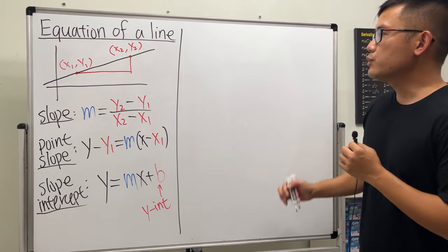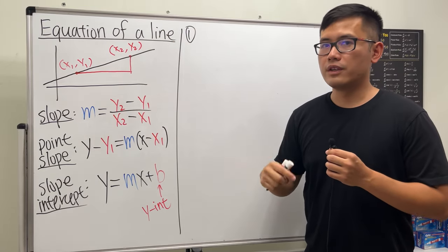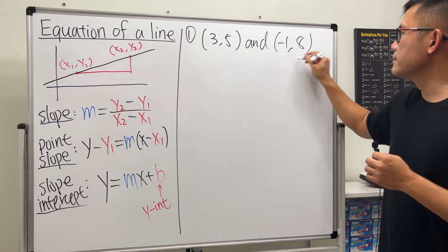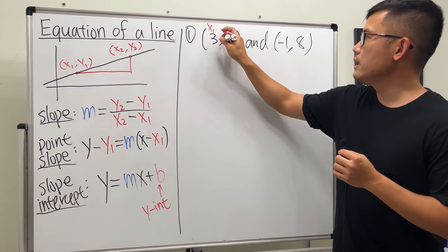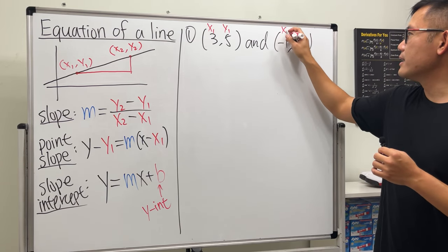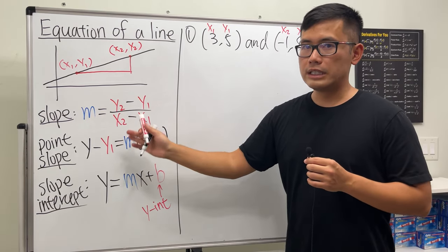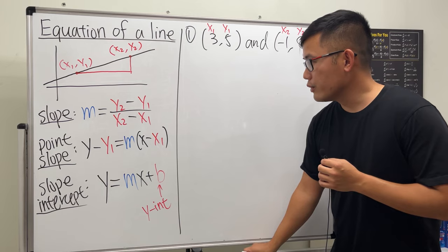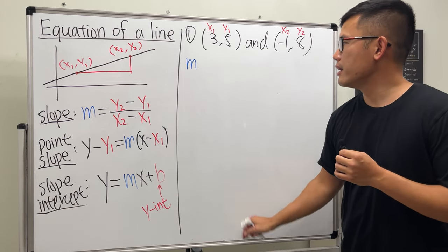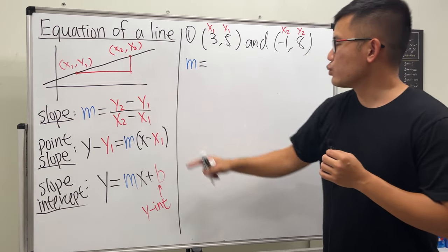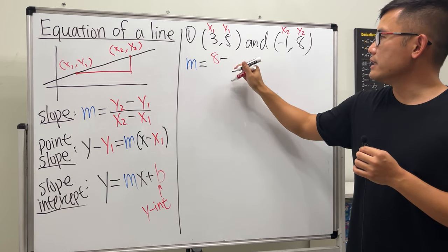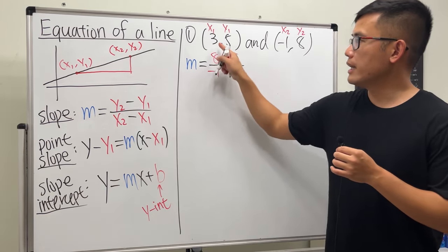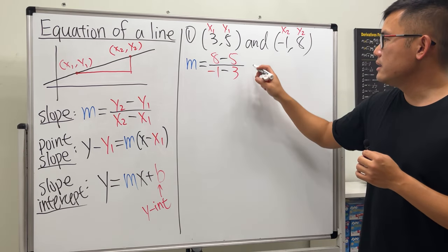Example 1: find the equation of a line through (3, 5) and (−1, 8). Label 3 as x1, 5 as y1, −1 as x2, and 8 as y2. First find the slope: m = (y2 − y1)/(x2 − x1) = (8 − 5)/(−1 − 3).